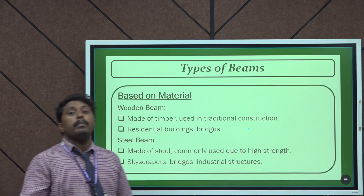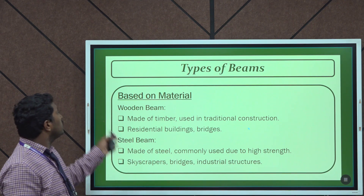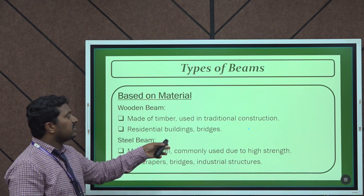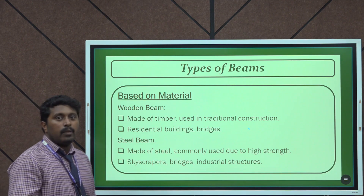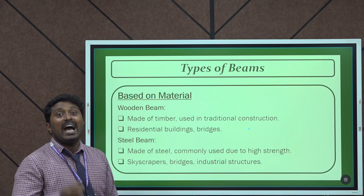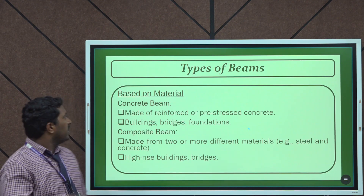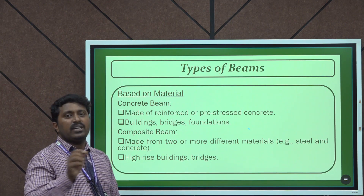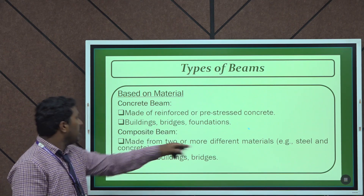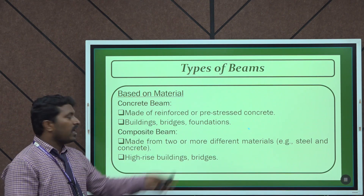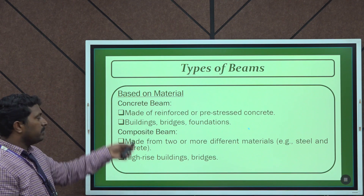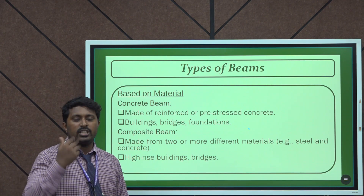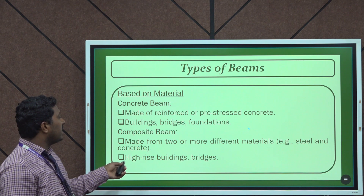The next category is classification based on materials. The first is wooden beams, made from timber, used in traditional construction — applications include residential buildings and bridges. Next is steel beams, made of steel, used where higher strength is required, such as in bridges and industrial structures. Next is the concrete beam, made from reinforced or pre-stressed concrete, used in buildings, bridges, and foundations. Finally, composite beams are made from two or more different materials combined into a single beam; they are used in high-rise buildings and bridges.